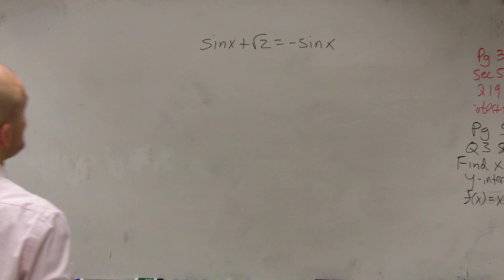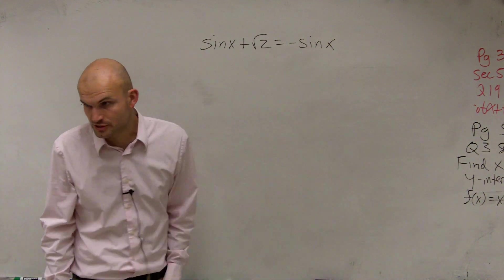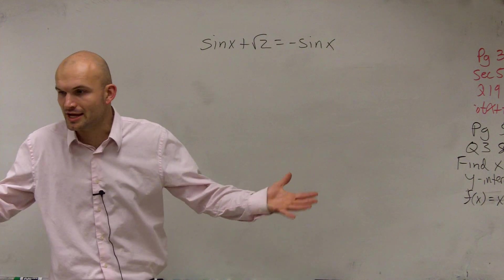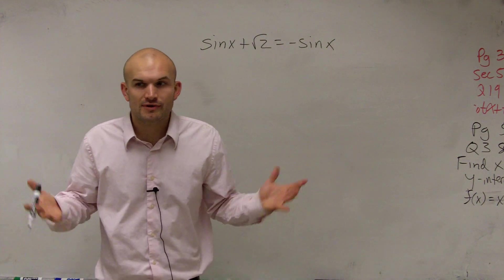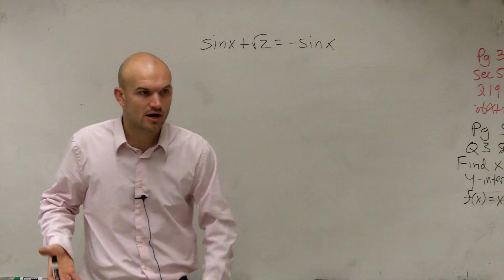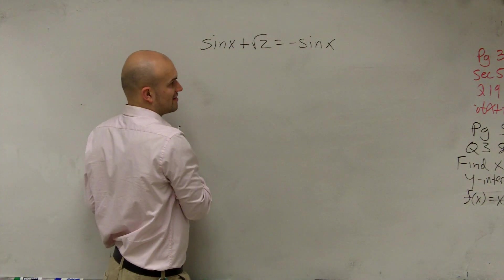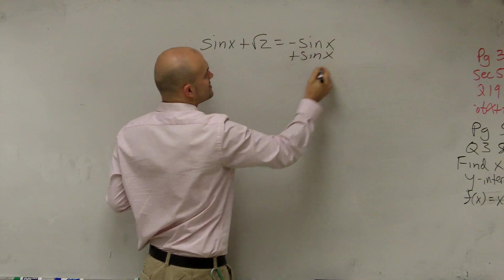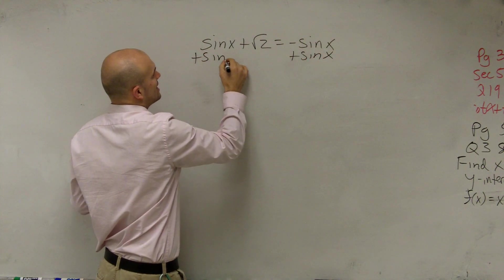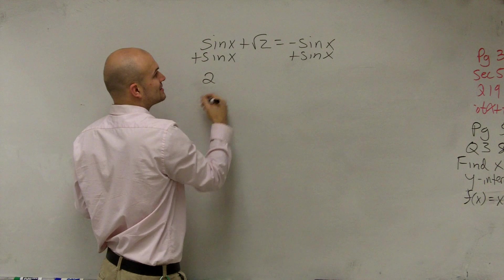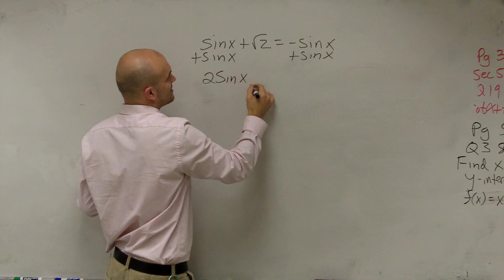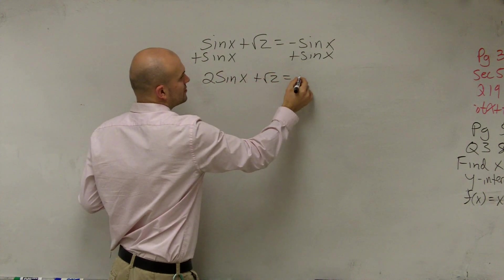All right. So in solving this problem, what we have is two trigonometric terms. Just like when you had an equation and you had variables on both sides, you have to get the variables on the same side to solve. So I'm just going to decide to get my variables on the left side. What I'll do is add sine of x to both sides. That now provides me with 2 sine of x plus square root of 2 equals 0.